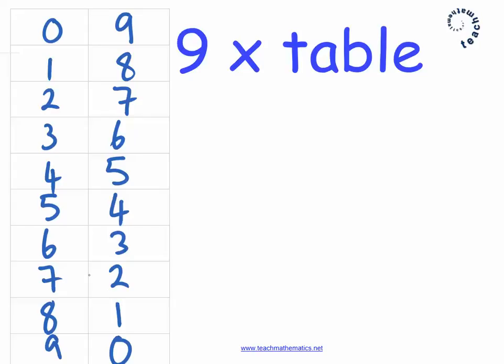And there you have the 9 times table. 1 times 9 is 9, 2 times 9 is 18, 3 lots of 9 is 27, all the way down to 10 lots of 9 here at the bottom.